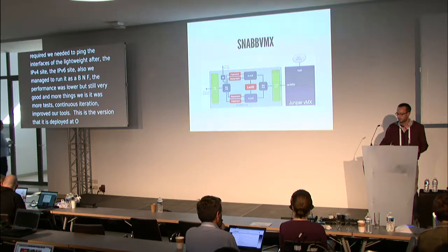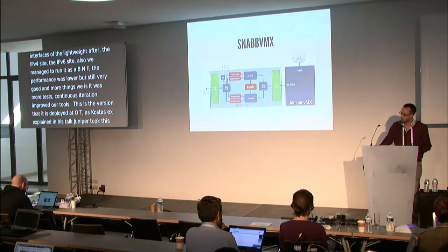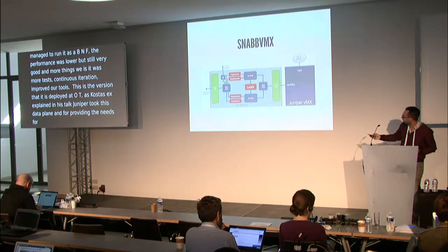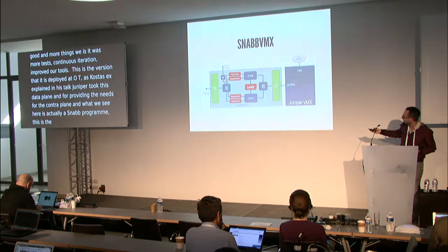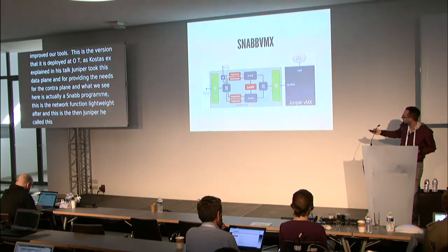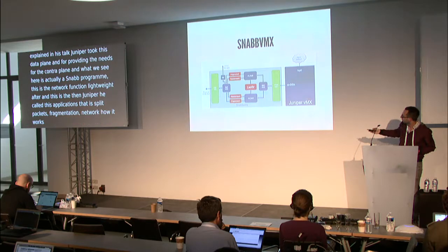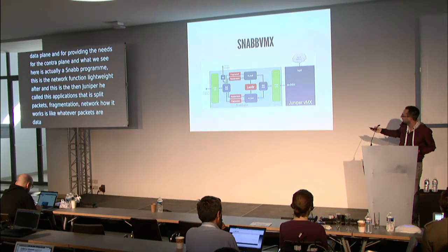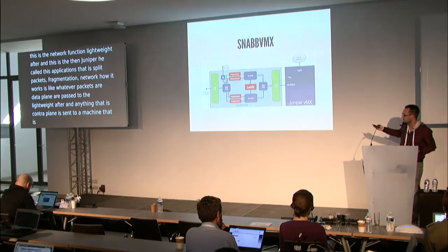As Costas explained in his talk, Juniper took this data plane and plugged it together with JunOS to provide the control plane. What you see here is a Snabb program — the Lightweight AFTR network function alone with an Intel NIC. Juniper engineers — mostly Marcel — added applications that split packets: fragmentation, and a network forwarder. How it works is that data plane packets are passed to the Lightweight AFTR, and anything that is control plane is sent to a virtual machine running JunOS, which resolves BGP packets, ARPs, and NDPs, and sends them back.